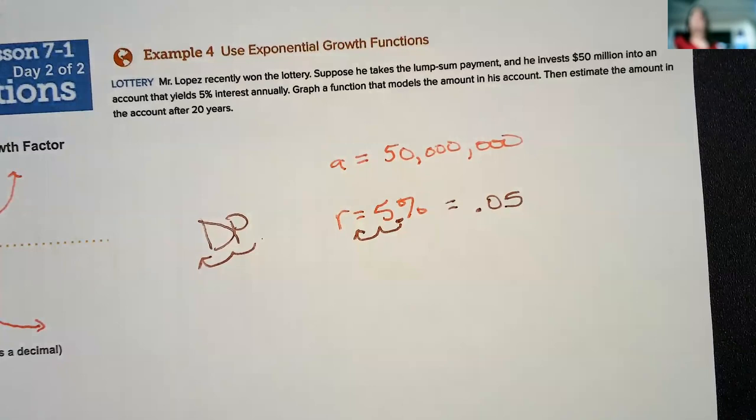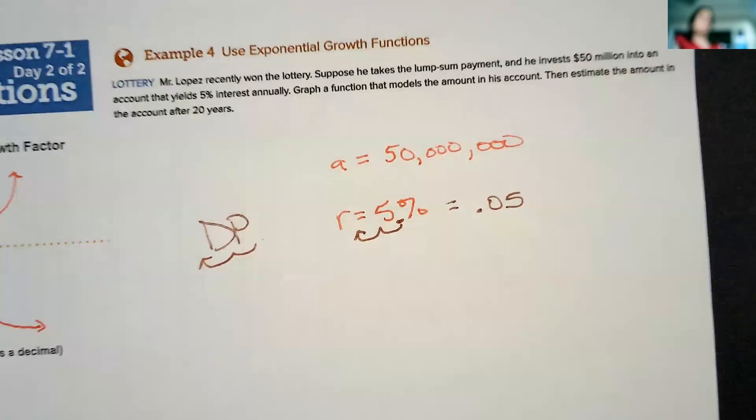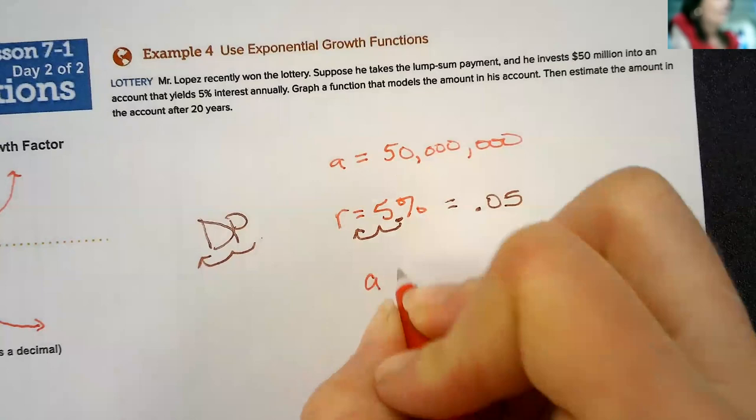And then it says, write the model, and then estimate the amount in the account after 20 years. So, after we write it, we're going to plug in a time of 20 years. But first, we've got to write this. We're plugging into its growth, 1 plus R to the T.